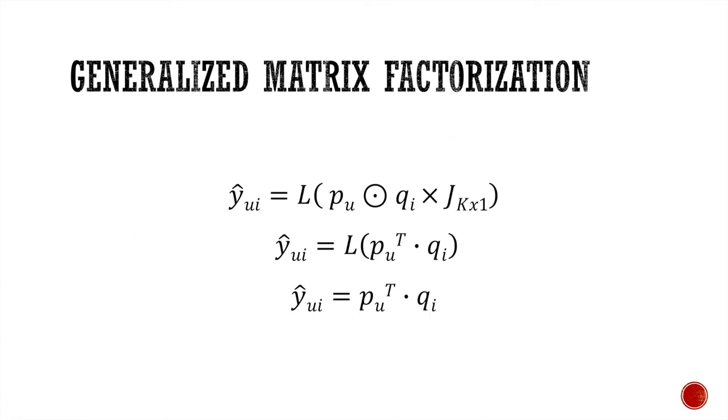We have the following equations. y-hat_ui denotes the predictive value of the unobserved entries for user u and item i. p_u and q_i are the latent vectors of user and item. And this sign right here is the element-wise product. Since k is a unit matrix, it assigns weight equal to 1 for each of the entries in the matrix that it's being multiplied on. So the value inside this parenthesis becomes the dot product between p_u and q_i.